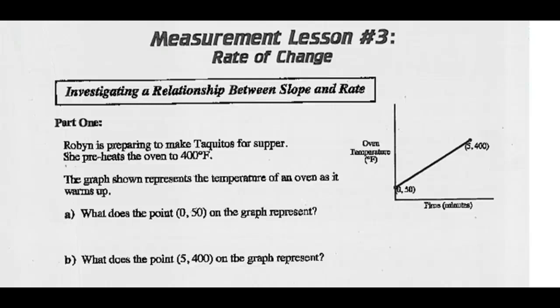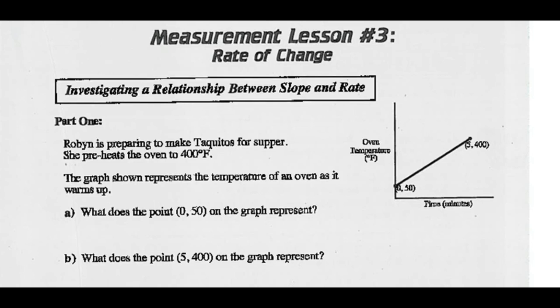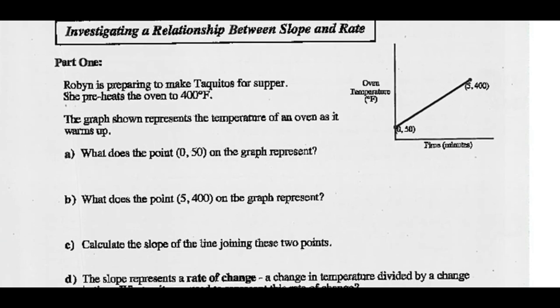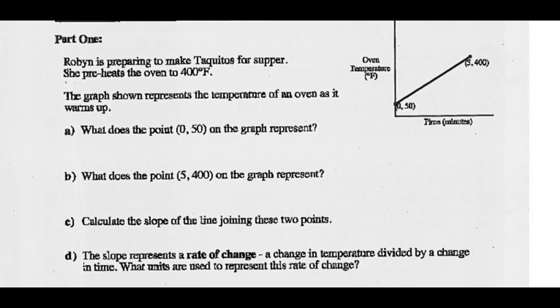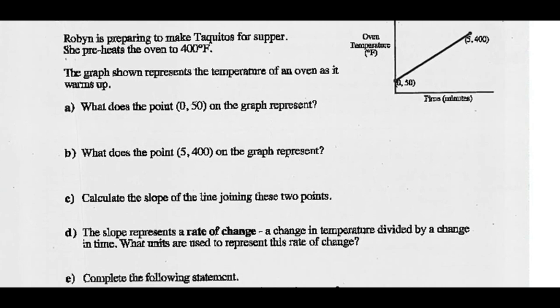Hey, Math 20-2s. Let's investigate rate of change today. All right, so start with slope and rate. Part 1. Robin is preparing to make taquitos for supper. She preheats the oven to 400 degrees Fahrenheit. The graph shown represents the temperature of an oven as it warms up.